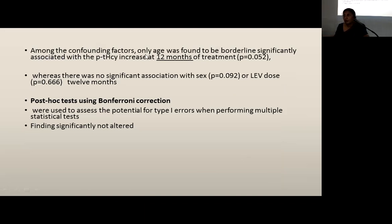Among the confounding factors, only age was found to be borderline significantly associated with plasma homocysteine, with plasma homocysteine increasing at 12 months of treatment (p=0.052). There was no significant association with sex or levetiracetam dose at 12 months. A post hoc test using Bonferroni correction was used to assess the potential for type one error when performing multiple statistical tests, and the findings were not significantly altered.